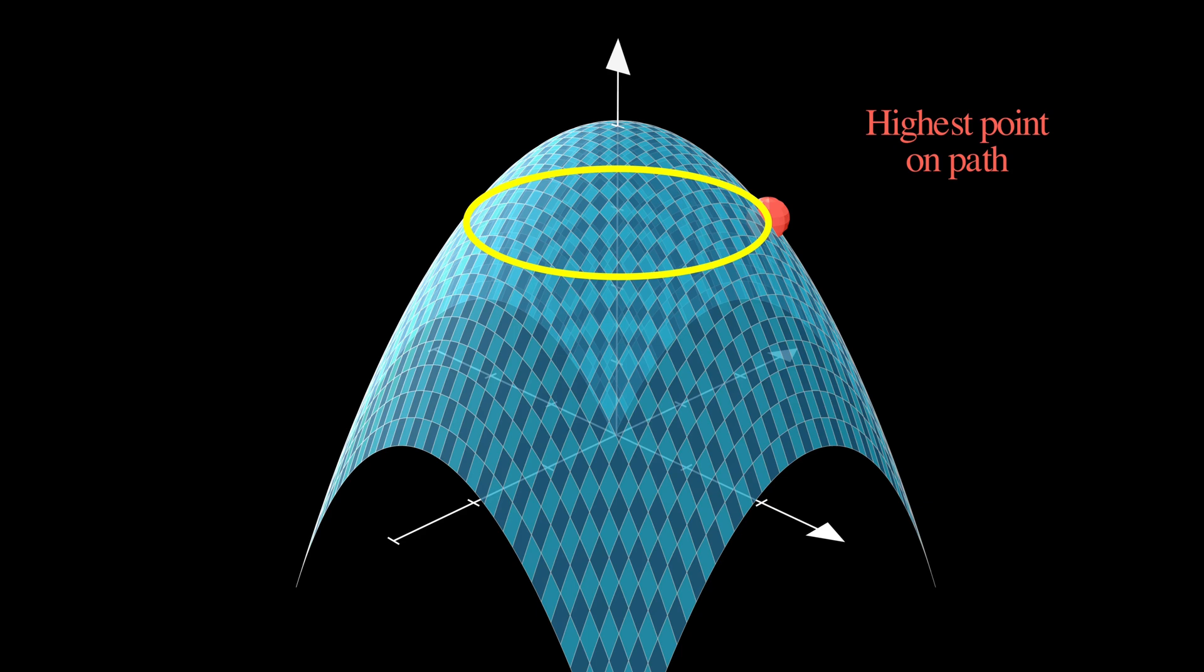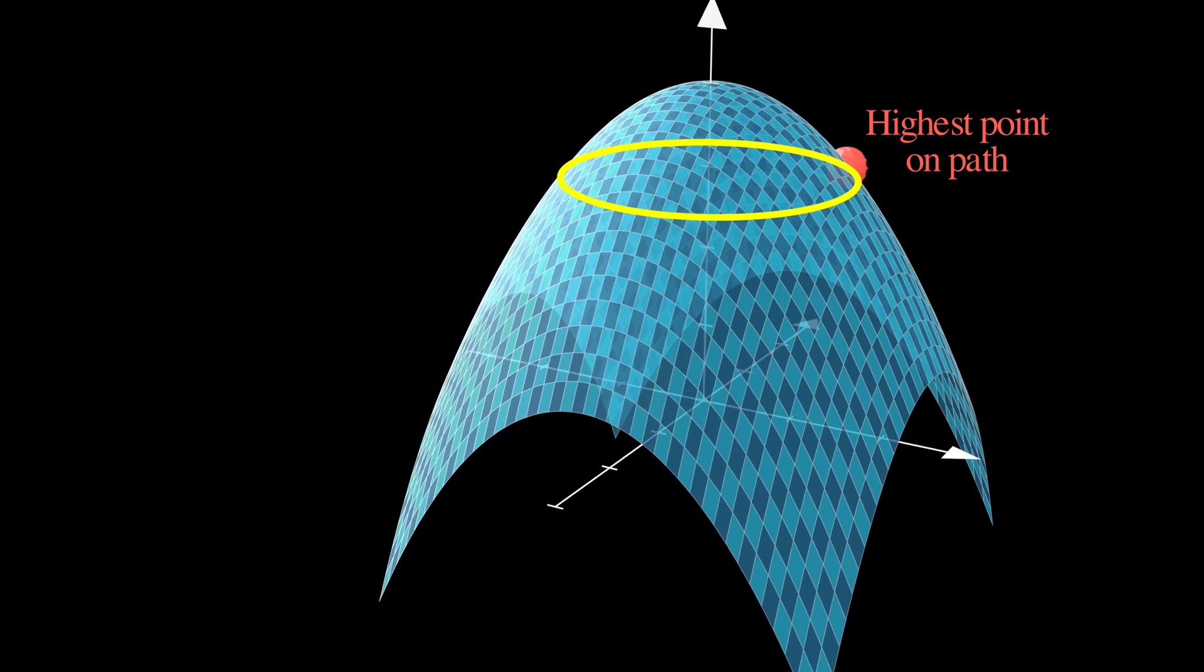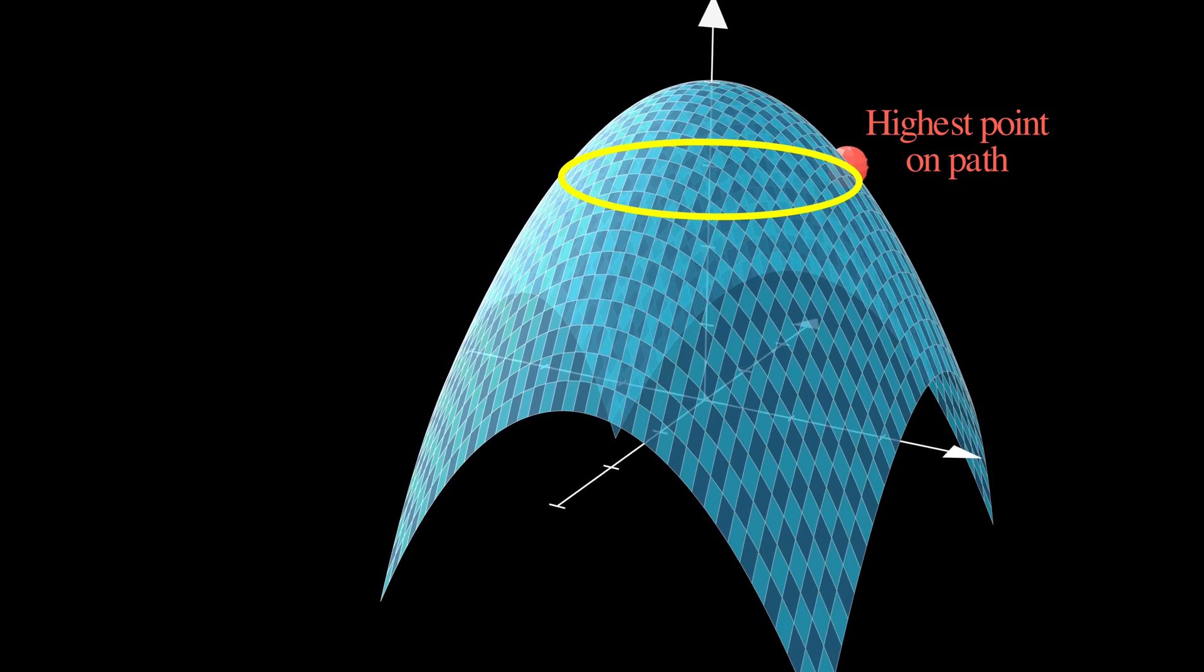That red dot you see is exactly where you want to be, the optimal point where you achieve maximum height while respecting your constraint. So, the natural question is, how do we actually find this special point mathematically?